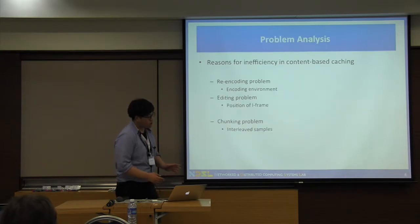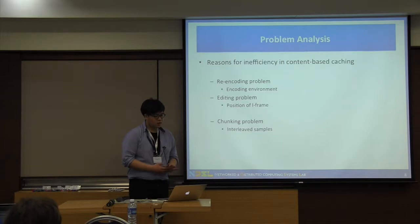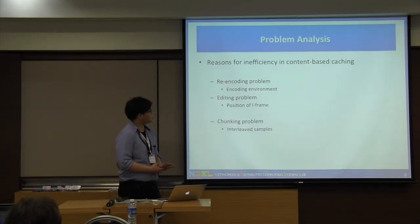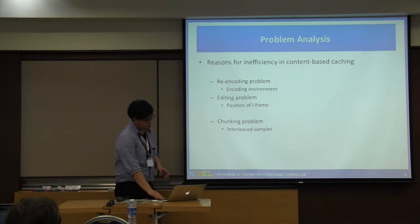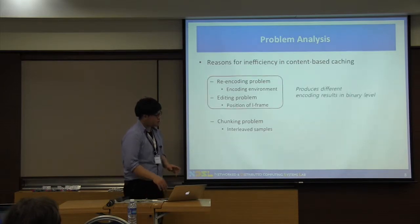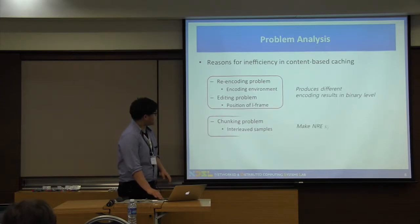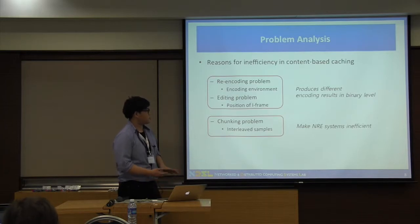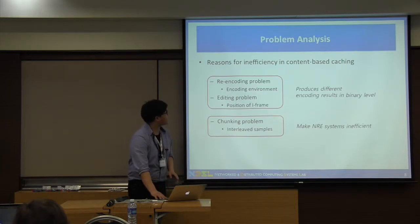For the first part of our work, we analyzed three causes of inefficiency in content-based caching. We found that the recording problem and editing problem are the causes for producing different encodings at the binary level, and the chunking problem could make existing systems inefficient.